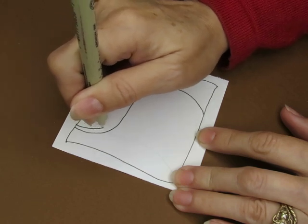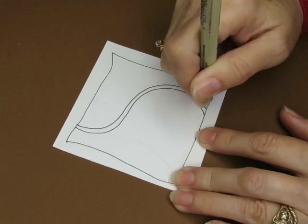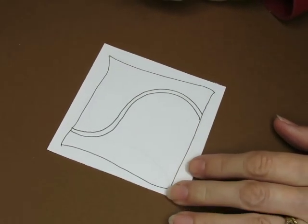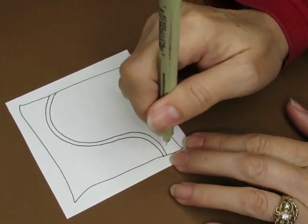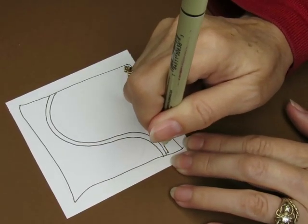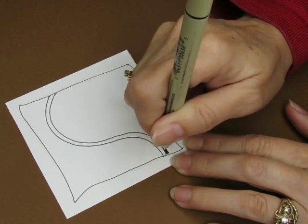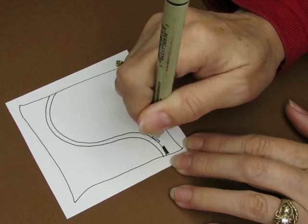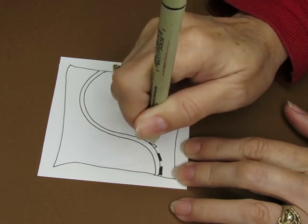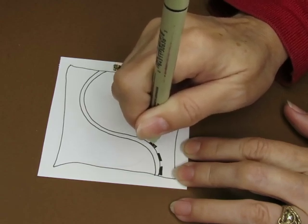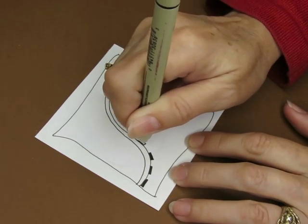And I'm going to draw it pretty much just like the pattern shows. Okay, and then here we're going to make these little rectangles. Like that, like that, like that, like that.